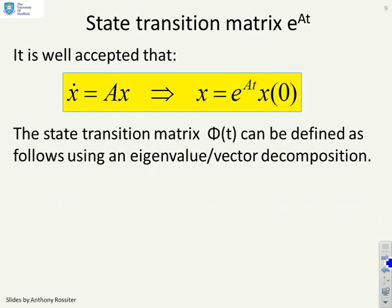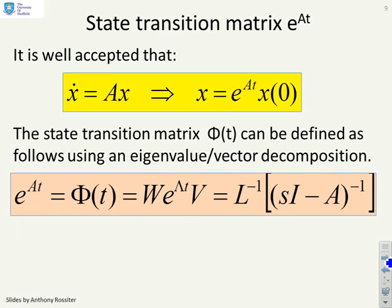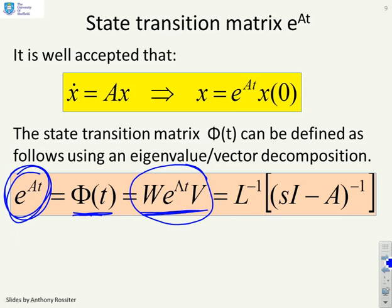So what's our result? The state transition matrix phi t can be written as W e to the lambda t V. And so when you see somebody write e to the At, there are two things that go through your mind. This is the state transition matrix. I can solve it as W e to the lambda t V or I can solve it using the inverse Laplace of sI minus A inverse. They're two different but equivalent methods.